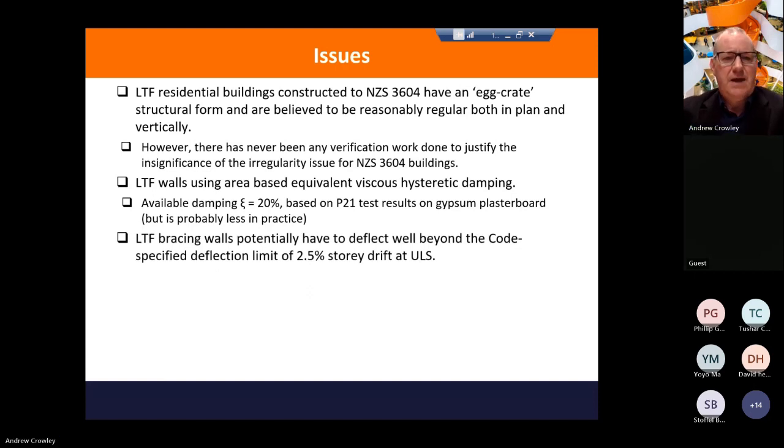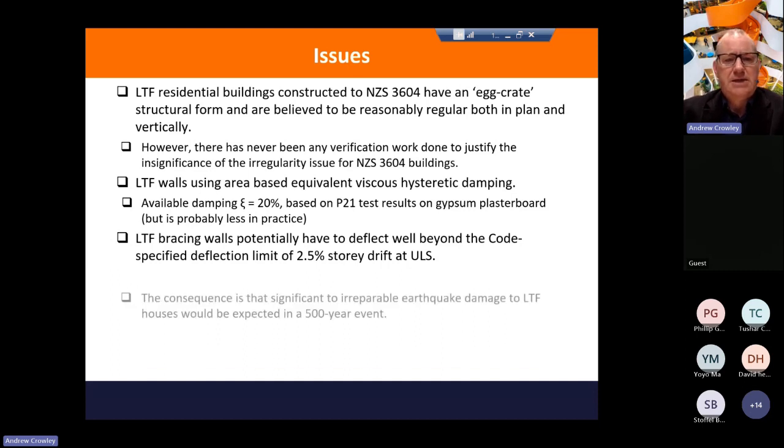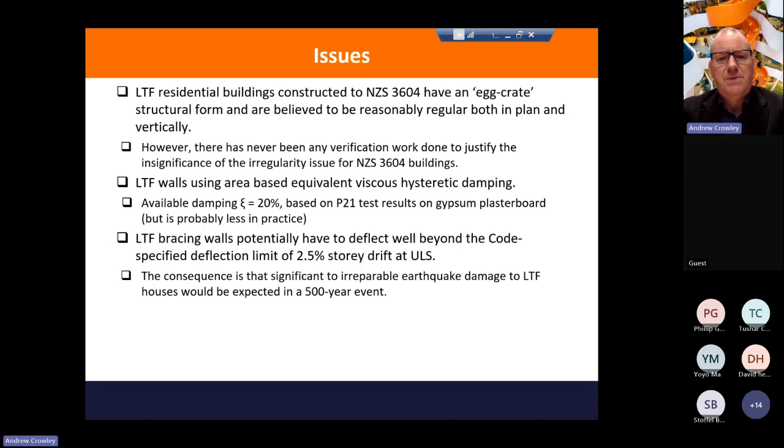So they have potential to deflect well beyond their code-specified deflection limit of 2.5% of the storey drift at ULS. And it's like a crumple zone. So you've designed your framed house to withstand the earthquake to such an extent that it won't collapse. However, there will be significant damage. And this was the issue that came up after Christchurch. Although the houses didn't fall down, many of them were written off anyway because of the amount of damage to the walls and the plasterboard.